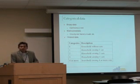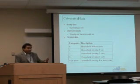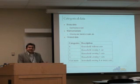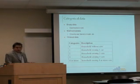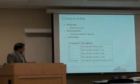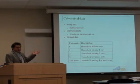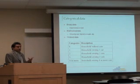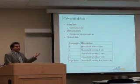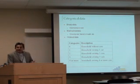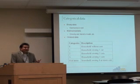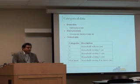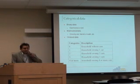When the order of the variable does not matter in how we code it, it's called multinomial. In cases where order matters — for example, household car ownership, where 0 represents 0 cars, 1 represents 1 car, 2 represents 2 cars, 3, 4, and 5 — there is a natural order in that data. That's called an ordinal dataset, or ordinal variables.